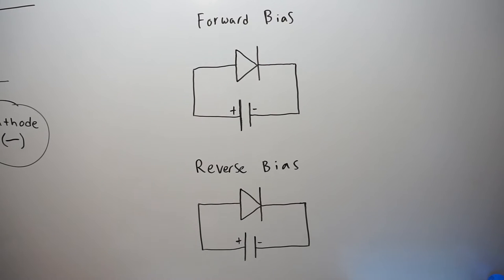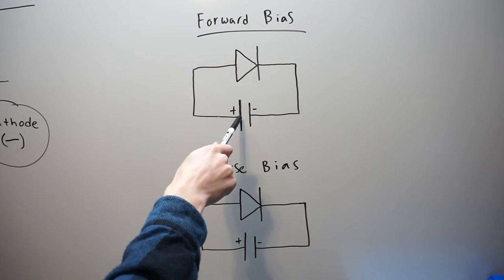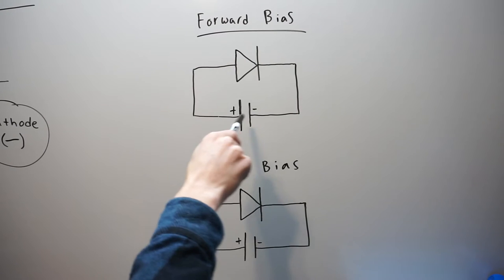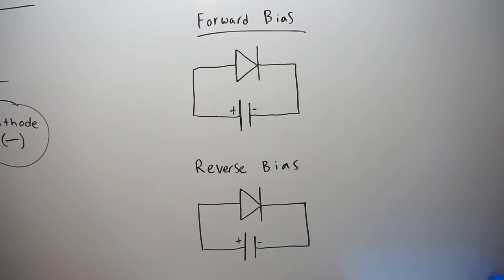I have two different diodes here placed in different configurations. The top one is what we call forward bias — the configuration which allows the diode to actually conduct current. Ideally a diode has zero resistance in this configuration and it acts just like a wire. If your anode is more positive relative to your cathode, there's a potential difference across the diode, and current will flow in the direction of the arrow on the diode schematic symbol — from the P-junction to the N-junction. That is conventional current, not electron current flow.